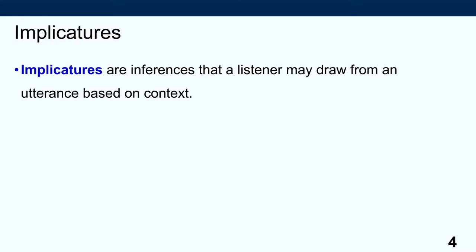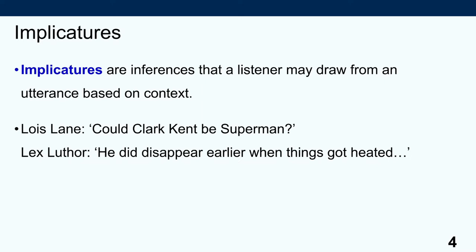The kinds of inferences that we draw about meaning in context we call implicatures. Implicatures are the inferences that a listener may draw from an utterance based on its context. Imagine a situation where Lois Lane is having a conversation with Lex Luthor, being a little bit suspicious of the complementary distribution of Clark Kent and Superman. She asks, 'Could Clark Kent be Superman?' And Lex Luthor responds, 'Hmm, he did disappear earlier when things got heated' — perhaps initially lending some credence to her thoughts, suggesting that when things get dangerous, we only see Superman and never Clark Kent. Very suspicious.